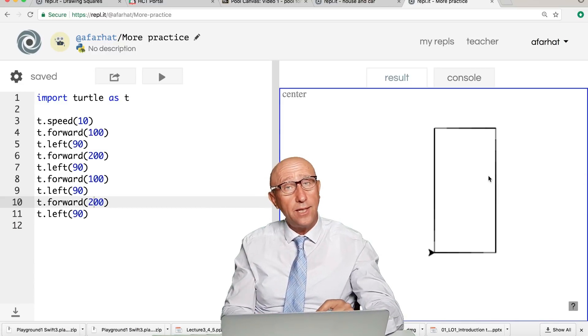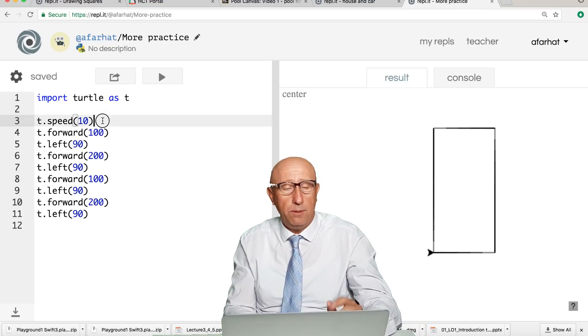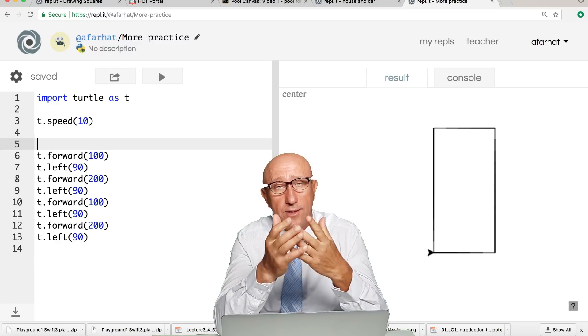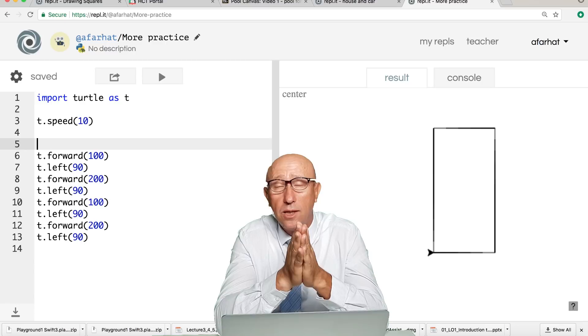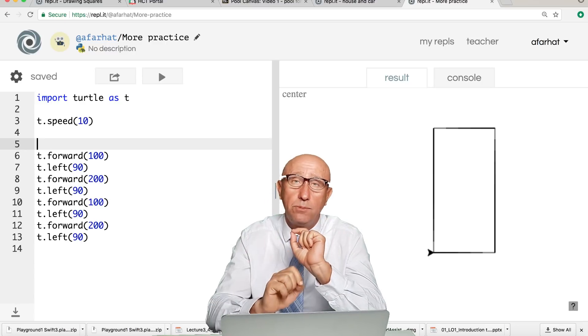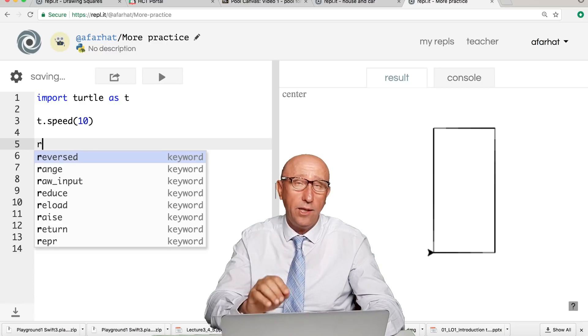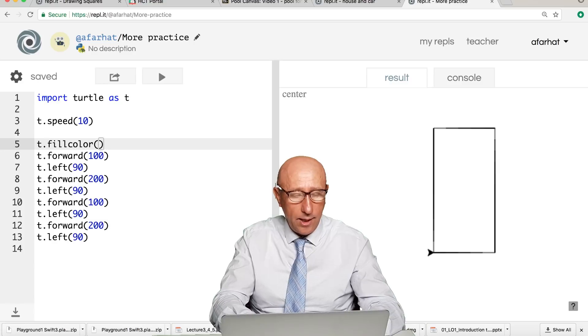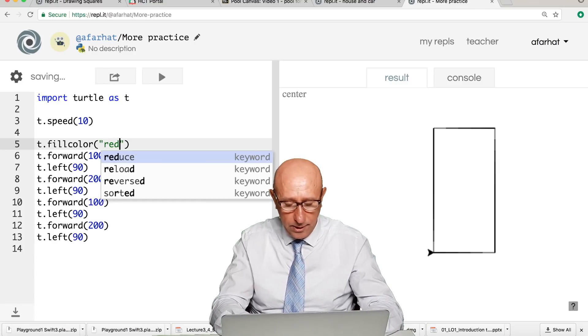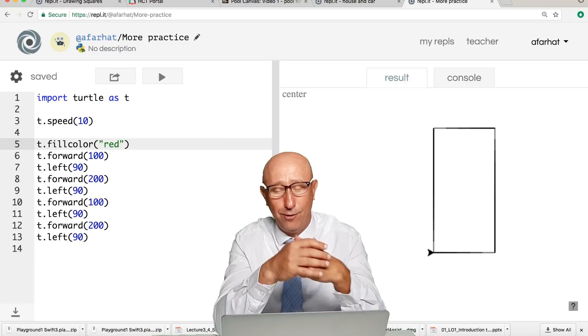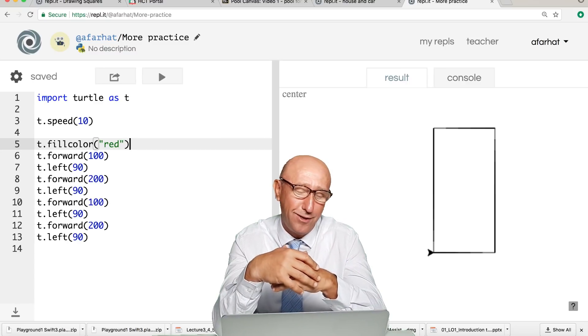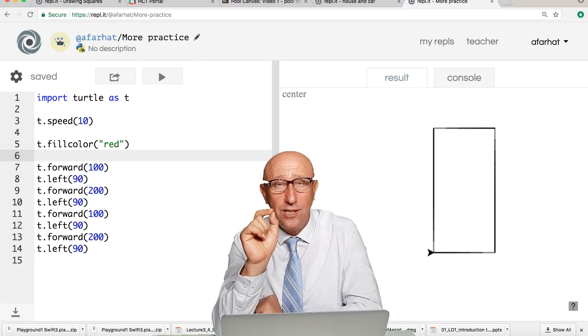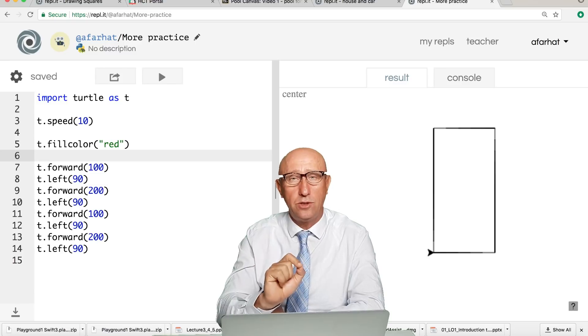How about filling the face of the building? The first thing we're going to learn, how do we start filling or choosing the color that we want to color this building with? You use a command called t.fillcolor, and then you choose the color. It was red, so I'm going to make it red. That's just to say what brush you're going to use.